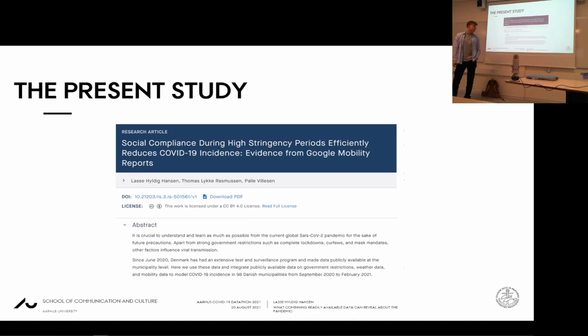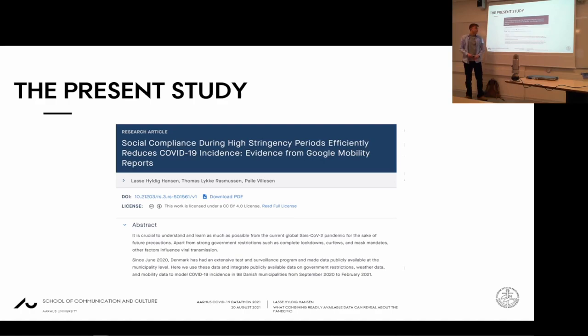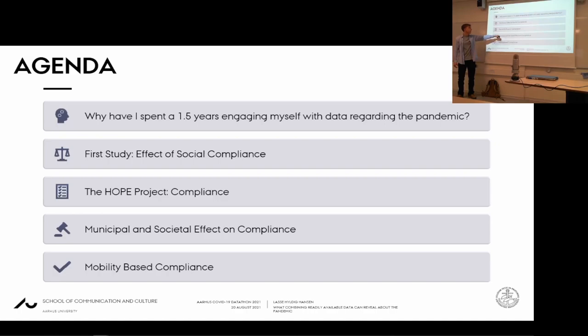It was me and my roommate Thomas. We made an exam called 'Social Compliance During High Stringency Periods and How It Efficiently Reduces COVID-19 Incidents.' We used Google Mobility Reports, which is a dataset made to study the pandemic. A PhD in biology picked it up and thought it looked good. Then we attended a COVID-19 conference where I met the whole project on how democratic societies act during a pandemic — they've received lots of awards for their work.